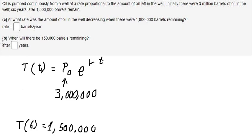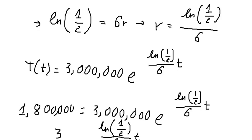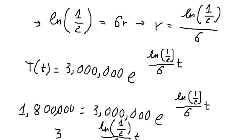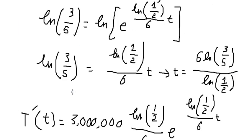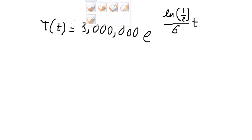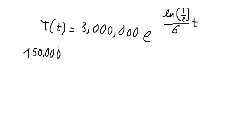Now we go to question B: when will there be 150,000 barrels remaining, and after how many years? To do this, we use the same equation. We put 150,000 into the function, then divide both sides by 3 million, giving 1 over 20.